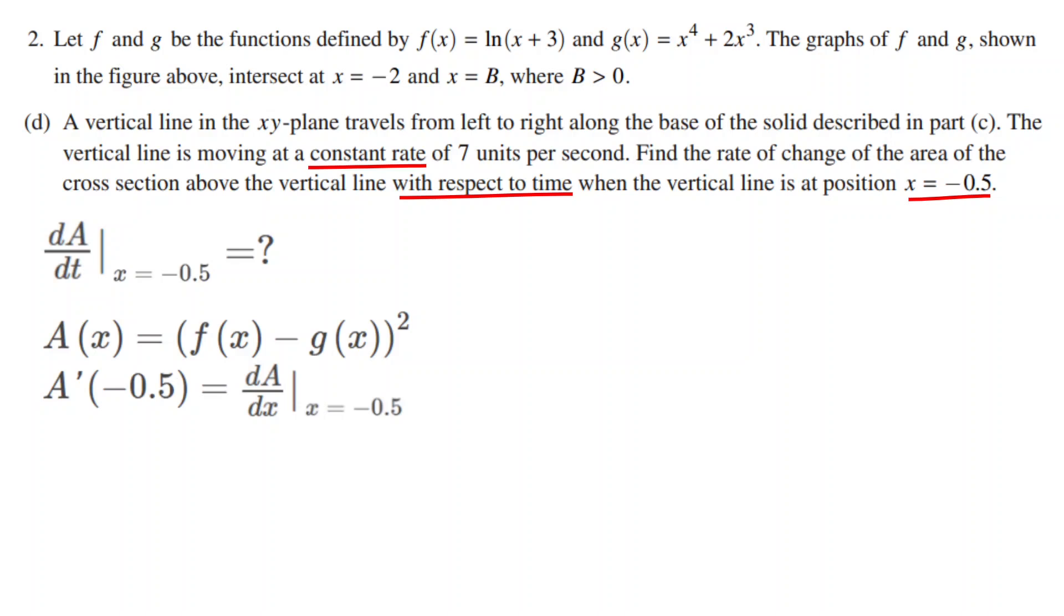The line moving at a constant rate of 7 translates to dx/dt equals 7. Now, we can find dA/dt by multiplying dA/dx by dx/dt.